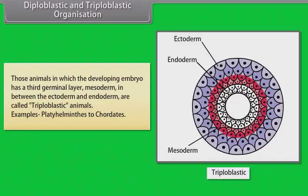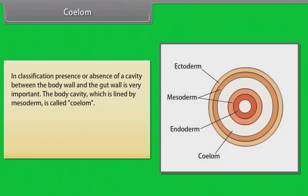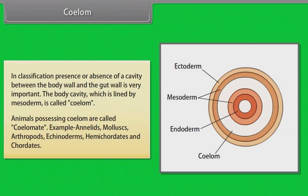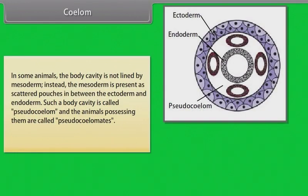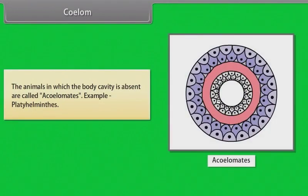Examples of triploblastic animals include Platyhelminthes and chordates. Regarding the coelom: the presence or absence of a cavity between the body wall and the gut wall is very important in classification. The body cavity lined by mesoderm is called coelom, and animals possessing it are called coelomates. In some animals the body cavity is not lined by mesoderm — such a cavity is called pseudocoelom and animals possessing it are called pseudocoelomates. Example: Aschelminthes. Animals in which the body cavity is absent are called acoelomates. Example: Platyhelminthes.